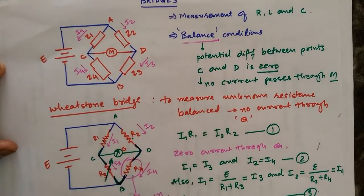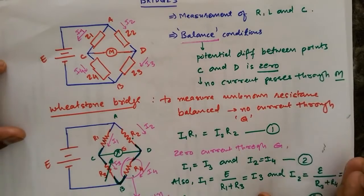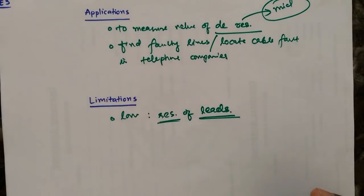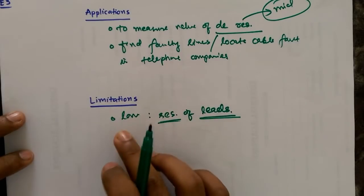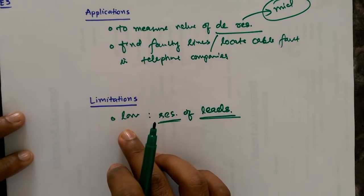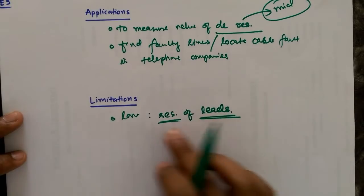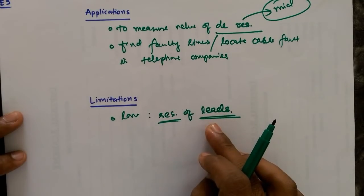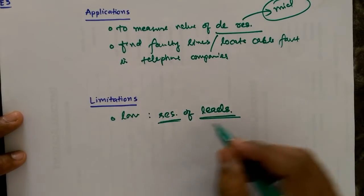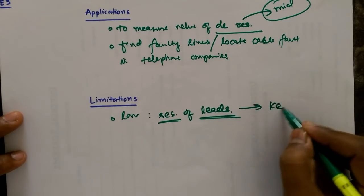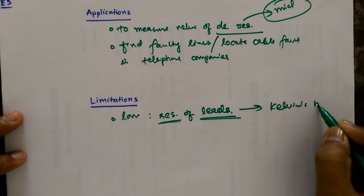So if we look at the circuit, the leads like these will also have the resistances, small amount of resistances, and it will be of the order of this resistance itself. So it will also affect the result, so that is one of the limitations, and its solution is Kelvin's bridge that we are going to discuss in next few lectures.